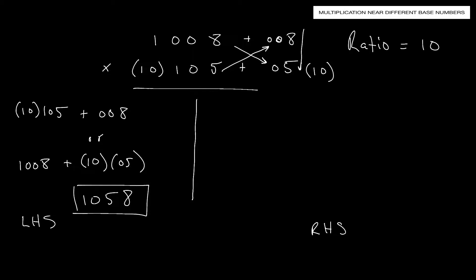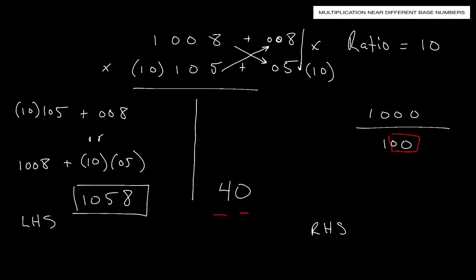For the right-hand side, we multiply the two excesses: 8 times 5 gives 40. The number of digits allowed on the right-hand side equals the number of zeros in the smaller base number. We have 2 zeros in base 100, so 2 digits are allowed — 40 fits perfectly. Our final answer is 1,058,40 — that is, 105,840.